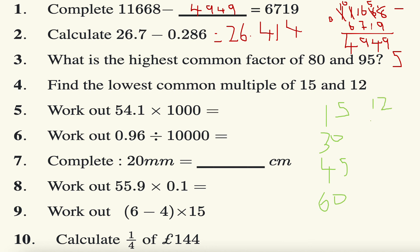And 60. So 60 is the smallest number that appears in both times tables, so 60 is the lowest common multiple.